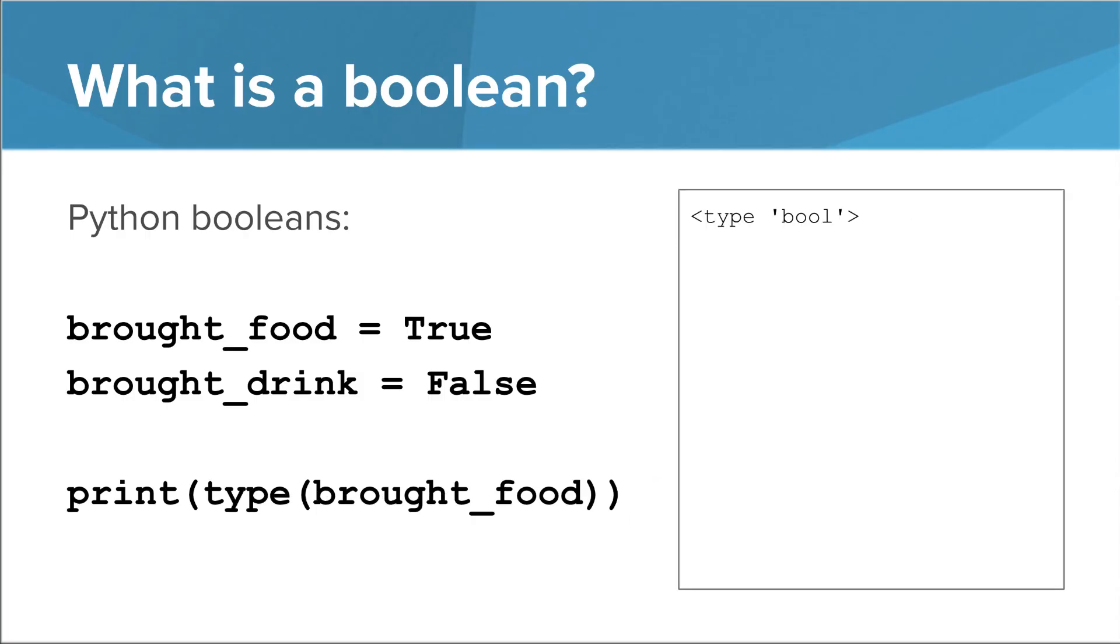So now, in addition to the three variable types you've learned about so far, int, float, and str, you now know a fourth variable type, bool.